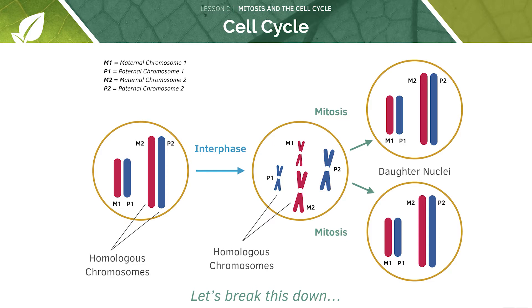In our parent cell we have our pairs of chromosomes — one from the mother and one from the father. The cell then goes through interphase in which we get DNA duplication, so we end up with two copies of the maternal chromosome and two copies of the paternal chromosome. Once the cell has undergone mitosis, we're back to essentially a mirror image of the parent cell — the two daughter cells have the exact same scenario, one copy from the mother and one from the father of each chromosome.